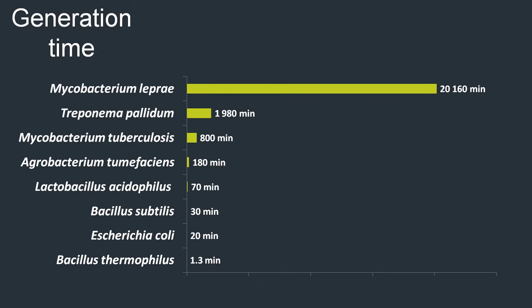The time a cell needs to divide is named generation time. Although all bacteria perform cell division, their generation time can vary greatly between different species. E. coli, for example, is one of the fastest dividing bacteria, with a generation time of approximately 20 minutes under perfect environmental conditions. Other generation times can last for hours or even days. The longest observed generation time is found in Mycobacterium leprae, the pathogen of leprosy, with a generation time of 14 days.